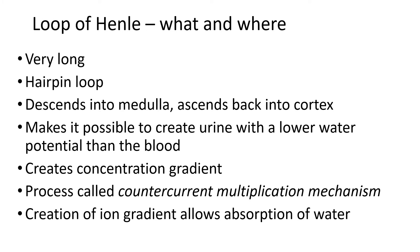The Loop of Henle is very long and it differs from one organism to another. Aquatic mammals will have a shorter Loop of Henle; desert mammals will have a longer Loop of Henle. So if you have a hamster or a gerbil at home, it will have a much longer Loop of Henle than you will. It is described as a hairpin loop because one part of the tubule comes down and then immediately doubles back on itself to come back up again.